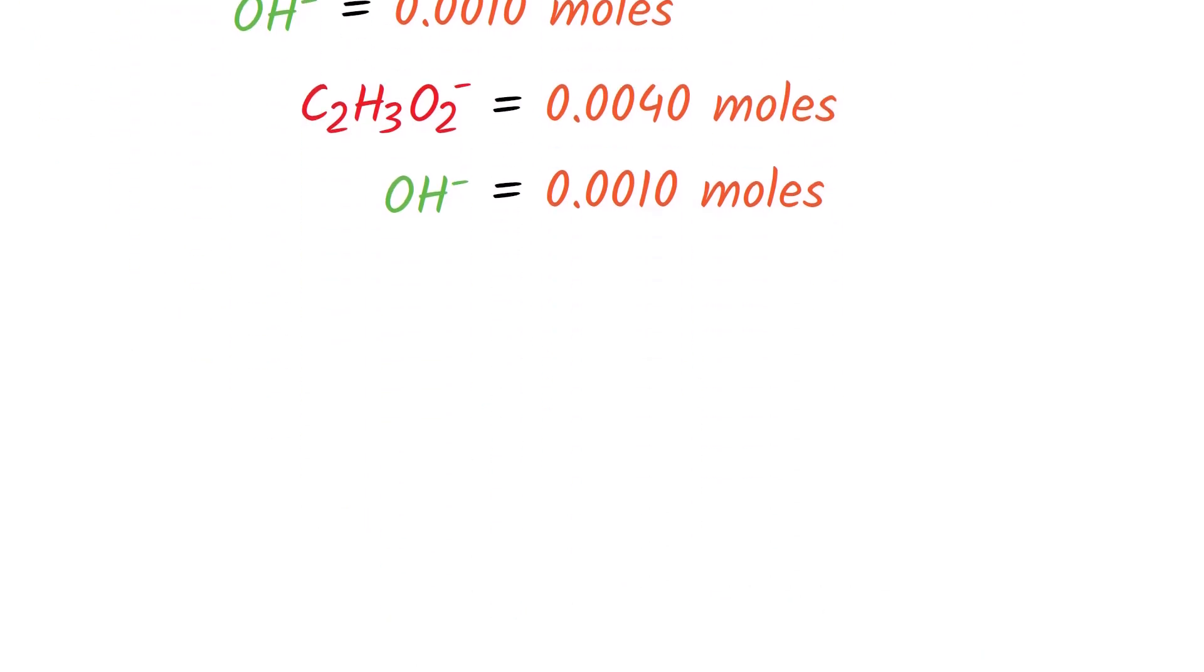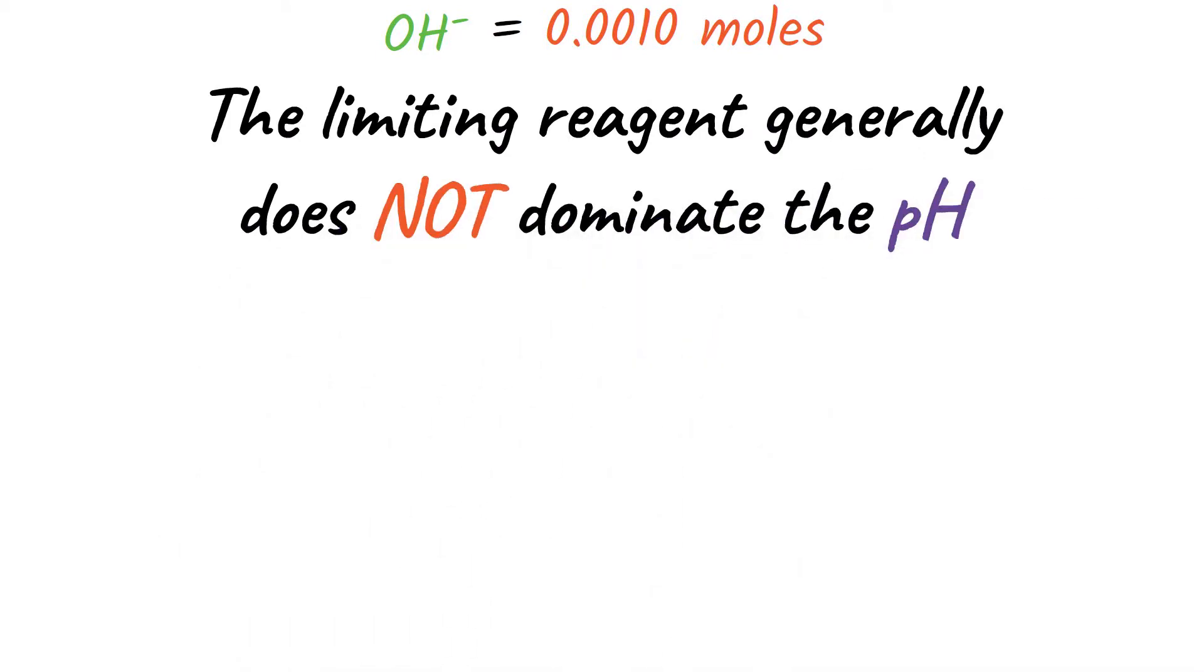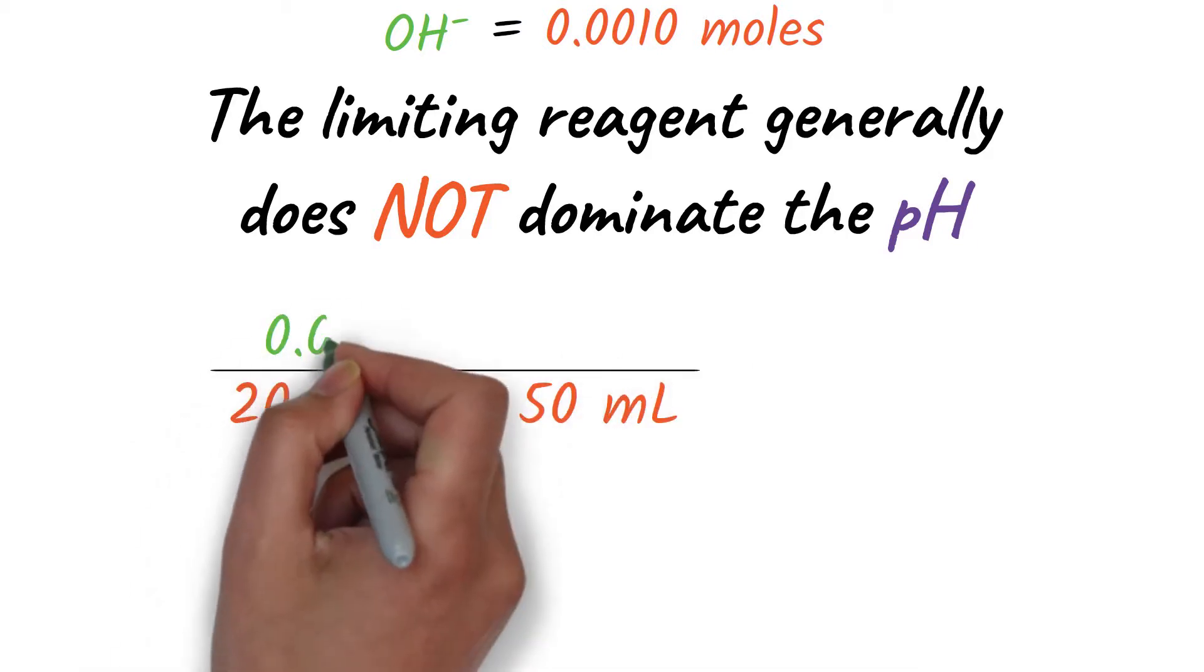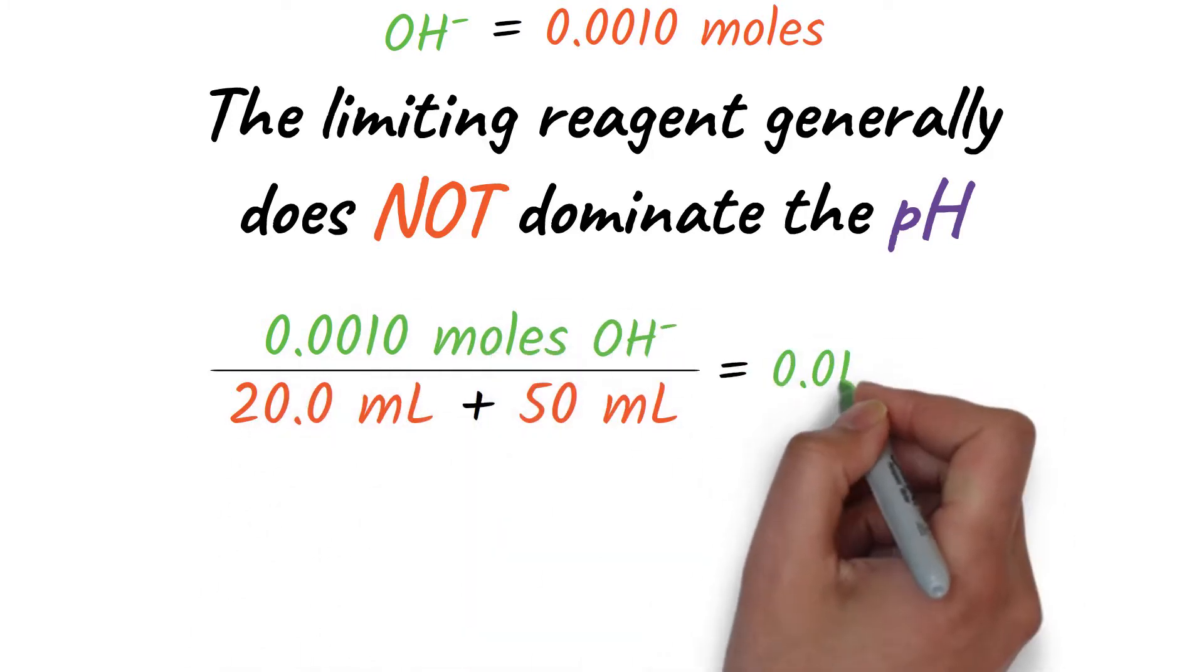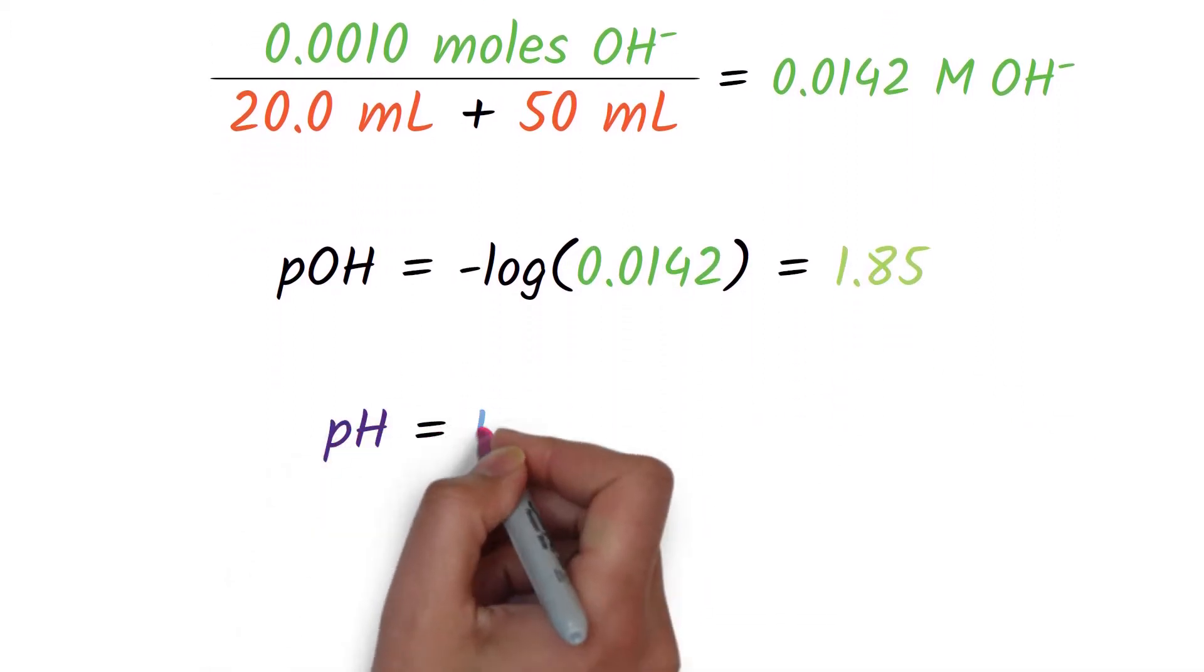We can ask what the pH of the resulting solution at equilibrium is. The acetate is a weak base and will not have a significant effect on the pH in the presence of the hydroxide ion. So, we can use the total volume from the original mixture, which is 20 mils plus 50 mils, divide the moles of the hydroxide ion by this amount to get the molarity, which is 0.014 molar. Then, calculate the pOH and use that to calculate the pH, which is 12.15.